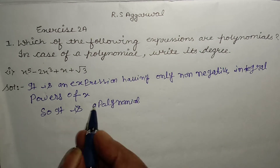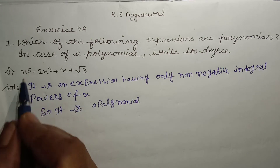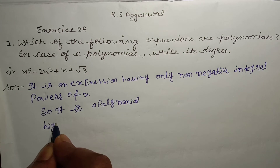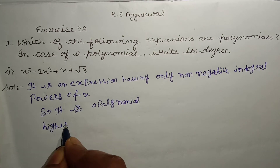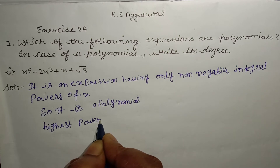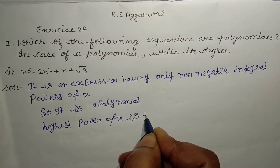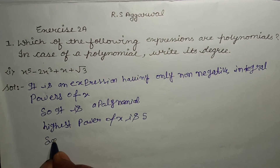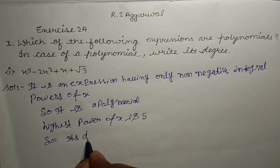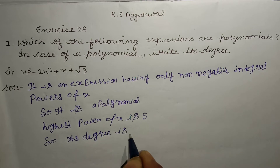Now let's find the degree. We look for the highest power of x. The highest power of x is 5, so its degree is 5.